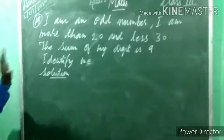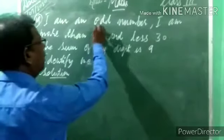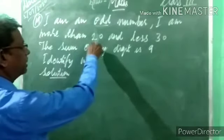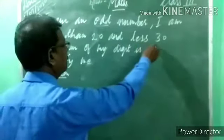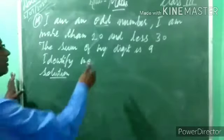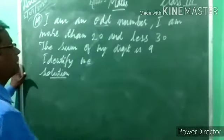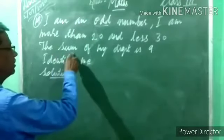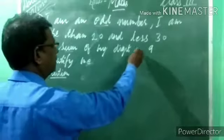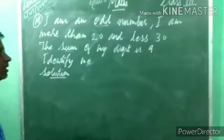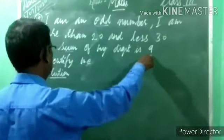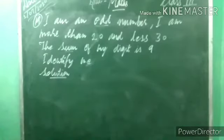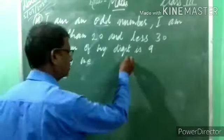Last question: I am an odd number. I am more than 20 and less than 30. The sum of my digits is 9. Identify me. Which odd number will it be? First, we will do rough work. What kind of number do we want? Odd numbers are numbers which cannot be put into pairs — for example, 1, 3, 5, 7, 9, 11, 13 and so on.